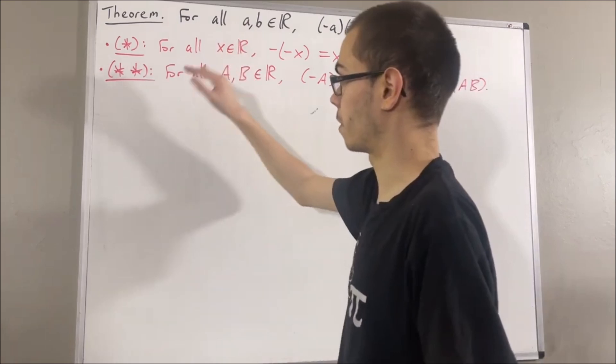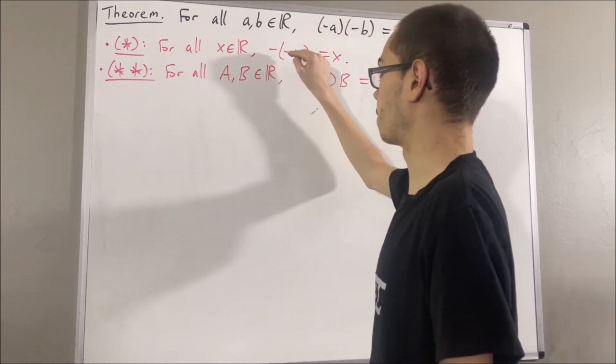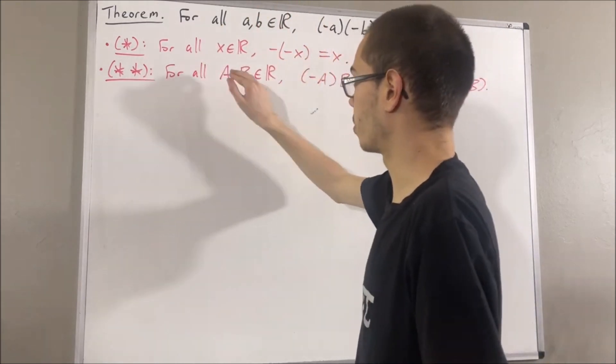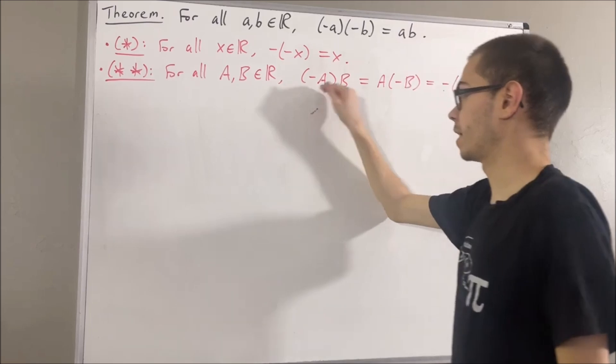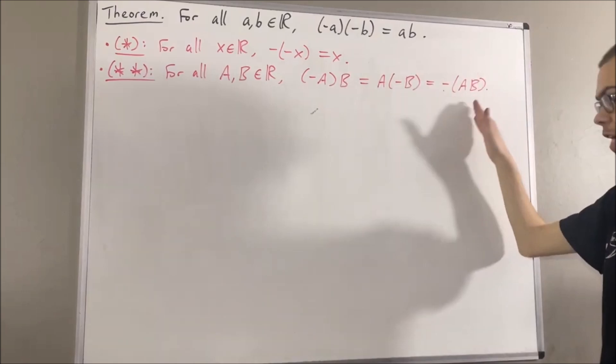And those results are as follows. The first result is, for all real numbers x, the negative of the negative x is equal to x. And the second result is, for all real numbers A and B, the negative of A times B is equal to A times the negative of B, which is equal to the negative of AB.